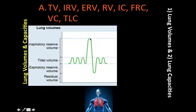Next is expiratory reserve volume, which is the volume that can be expired after the expiration of tidal volume. So it dips below tidal volume. Then we have residual volume — the volume that remains in the lung after maximal expiration. After we maximally expire, what remains in the lung is the residual volume.